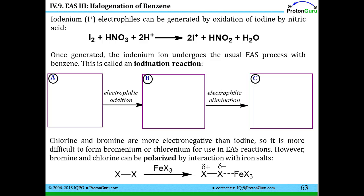For an electrophilic aromatic substitution reaction we need an electrophile. It's very difficult to make an F+ cation from fluorine, since fluorine is the most electronegative element — we're used to seeing it as an anion. So it's easiest to make a cation from iodine among the halogens, because it's the least electronegative.